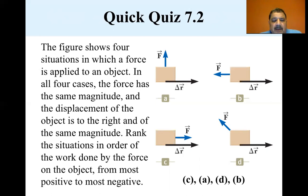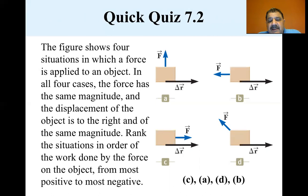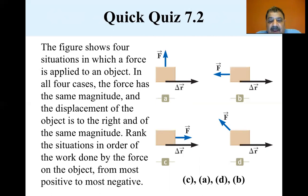The work done in C is positive and of the largest possible value because the angle between the force and displacement is zero. The work done in A is zero because the force is perpendicular to the displacement. In D and B, negative work is done because in neither case is there a component of force in the direction of the displacement. Situation B is the most negative because the angle between force and displacement is 180 degrees, and the cosine of 180 degrees is minus one.